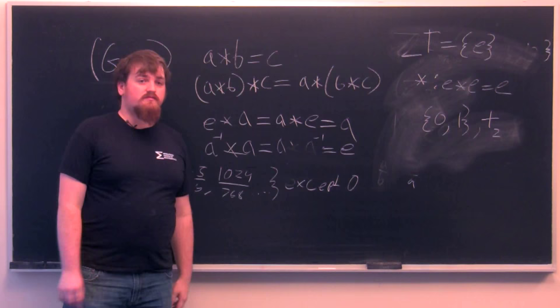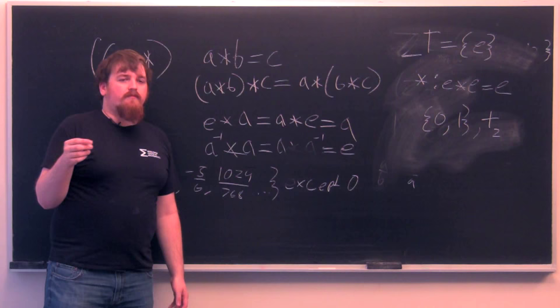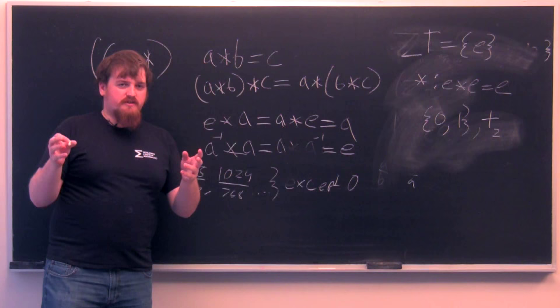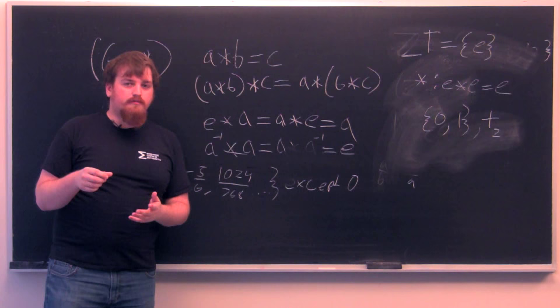So, you may have noticed that all these groups I've been talking about so far have the property that any element plus or times another element is equal to the same operation in the other order. This property is called being an abelian group, but not all groups have to be abelian.